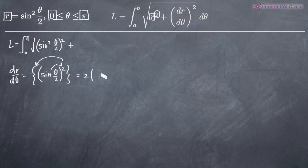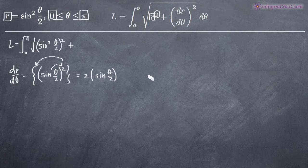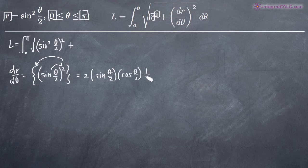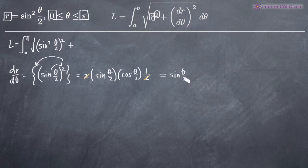By the power rule, two minus one gives us an exponent of one, which we don't need to write. By chain rule, we multiply by the derivative of sine of theta over two, which is cosine of theta over two. Then we multiply again by the derivative of theta over two, which is one half. The two out front and the one half cancel, leaving us with dr over d theta equals sine of theta over two times cosine of theta over two.